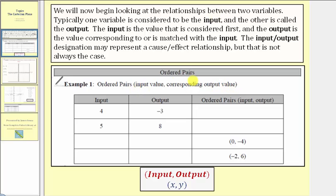For an ordered pair we have the input value comma the corresponding output value in a set of parentheses. Or in short, it's the input comma the output in parentheses.